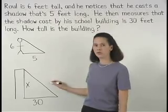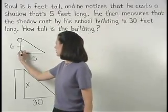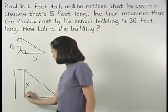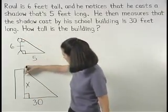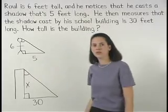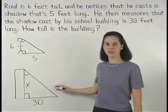Notice that the two triangles that we've drawn are similar because they both have right angles and the shadows are cast at the same angle. So the triangles are similar by the angle-angle similarity postulate.